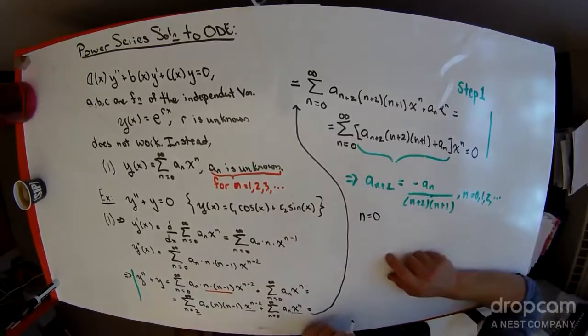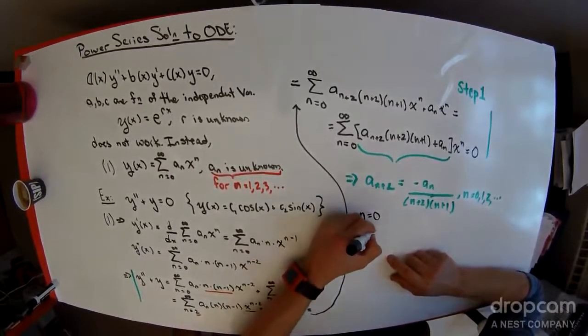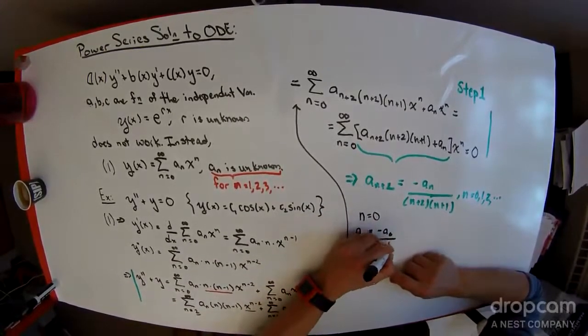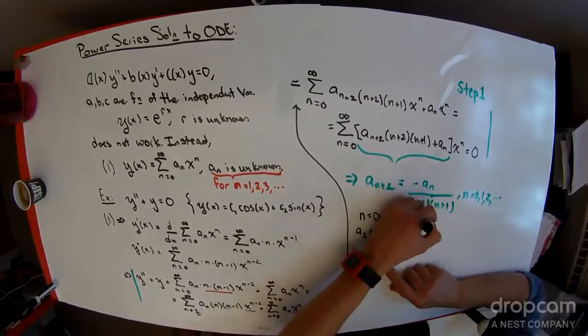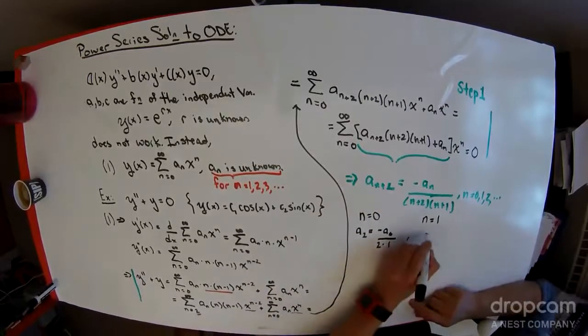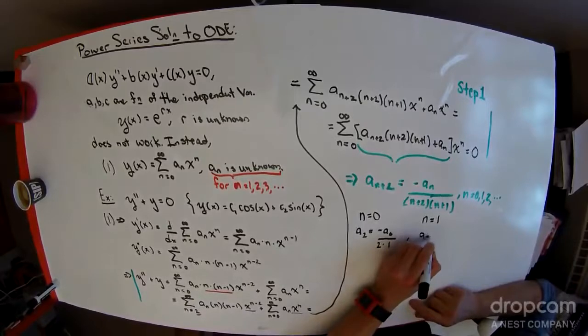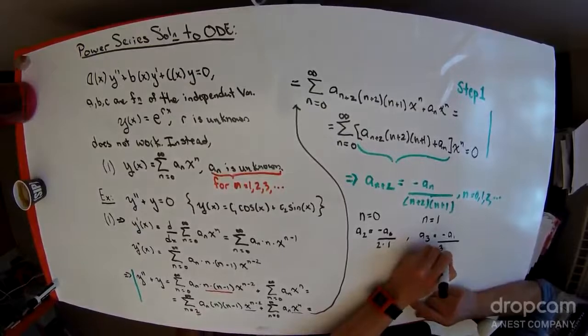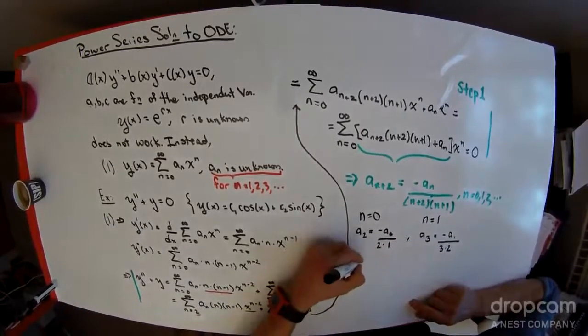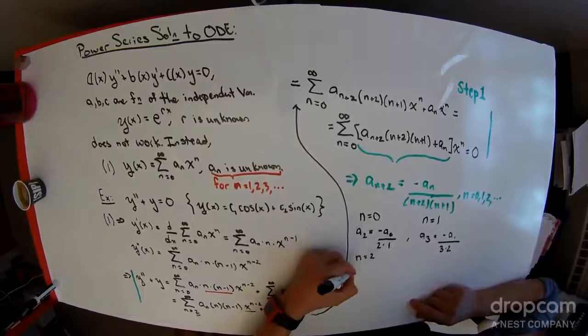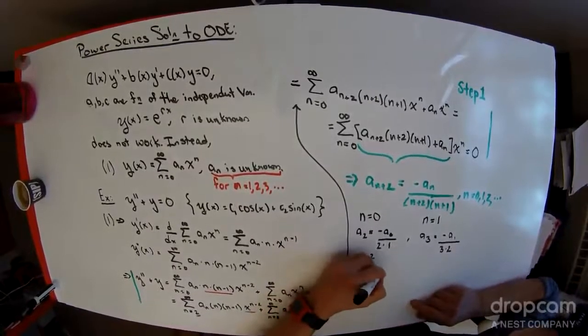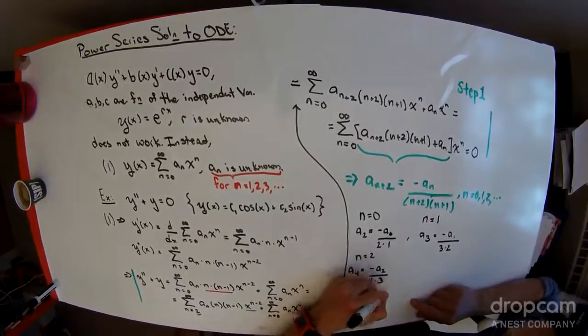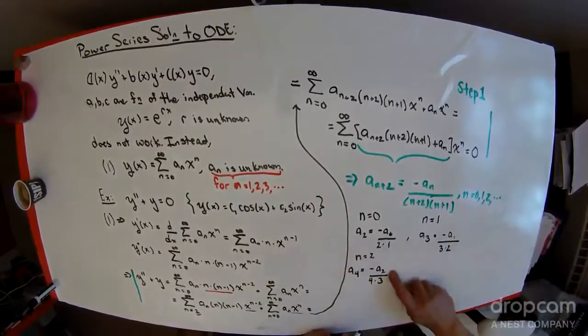So if I set n equals 0, I'm looking at a sub 2, which is equal to negative a sub 0 over 2 times 1. If n is equal to 1, I have a sub 3 is equal to negative a sub 1 over 3 times 2. If n is equal to 2, I see a sub 4 is equal to negative a sub 2 over 4 times 3. But a sub 2 is known.